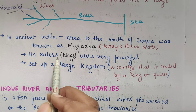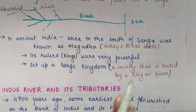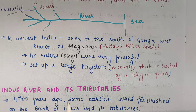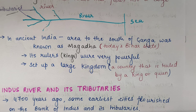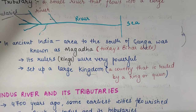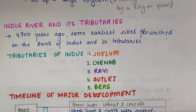Its rulers were very powerful. They were ruling this whole empire very efficiently. They set up a large kingdom. A country which is ruled by a king or a queen is a kingdom — koi bhi country jisko king ya queen rule karta hai, that is known as kingdom.